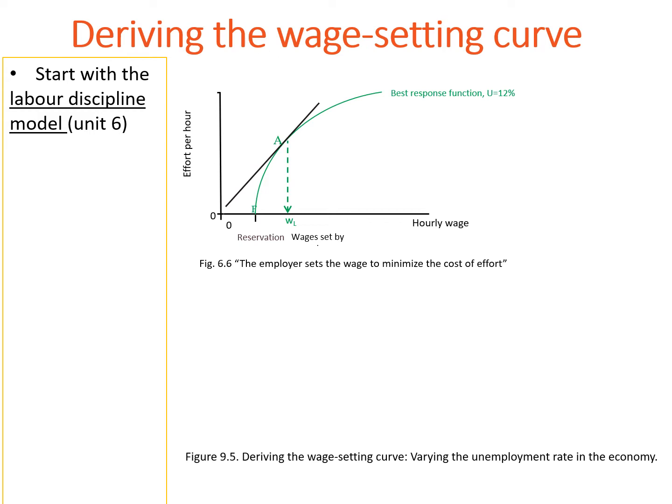Let's start from the employer's perspective. He or she wants to maximize profit. As such, the employer wants to obtain effort from the employees at the lowest cost, so at the lowest wage. Given the hourly wage on the x-axis and the effort on the y-axis, that means the employer wants to get onto the steepest ISO cost line possible.